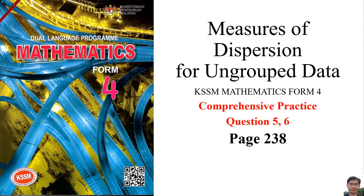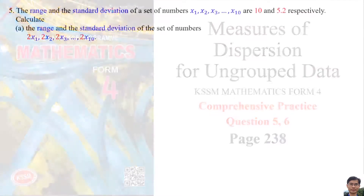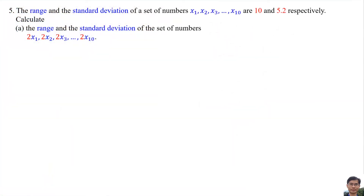Measure of Dispersion for Ungrouped Data — KSSM Mathematics Form 4, Comprehensive Practice Questions 5 & 6, Page 238. Question 5: the range and the standard deviation of a set of numbers are 10 and 5.2 respectively. Calculate the range and the standard deviation of the new set of numbers.